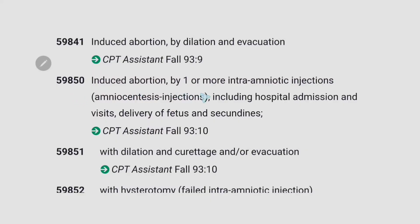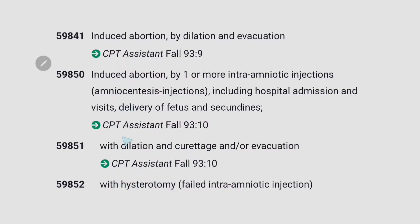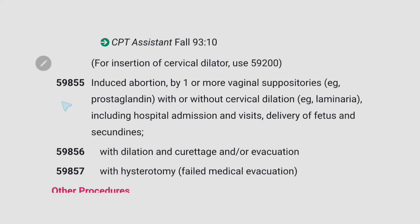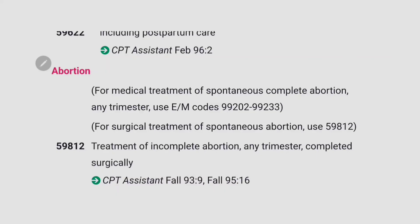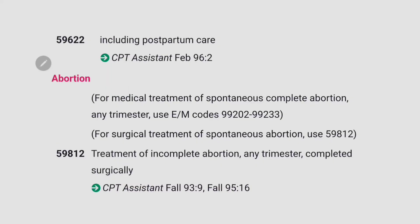59850 is for induced abortion by one or more intra-amniotic injections. 59851 is for induced abortion by one or more intra-amniotic injections with dilation and curettage or evacuation. 59855 is for induced abortion by one or more vaginal suppositories with or without cervical dilation, including hospital admission and visits. To sum up, for abortion: if a spontaneous abortion does not require surgical treatment, code the appropriate evaluation and management code.